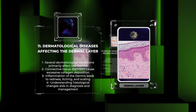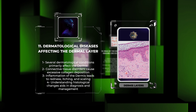Examples include connective tissue disorders like scleroderma, which cause excessive collagen deposition resulting in thickened and hardened skin. Other diseases such as dermatitis and psoriasis involve inflammation of the dermis, leading to redness, itching, and scaling. Understanding the histological changes occurring in the dermis in these diseases aids in their diagnosis and management.